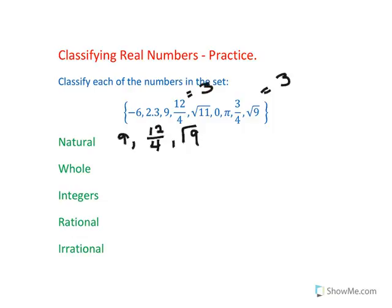So, whole numbers are natural numbers plus 0, so we have 9, 12 over 4, square root of 9, and 0.